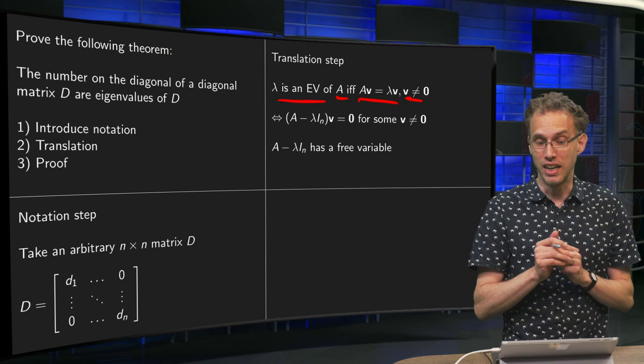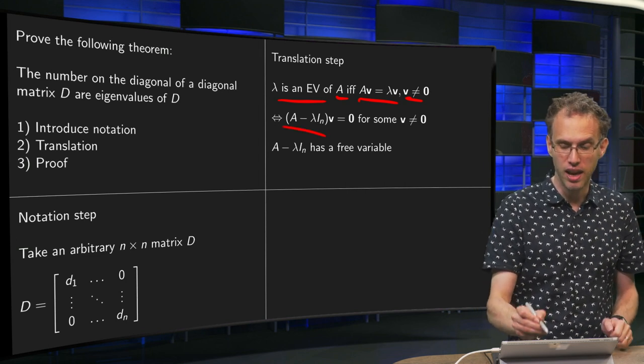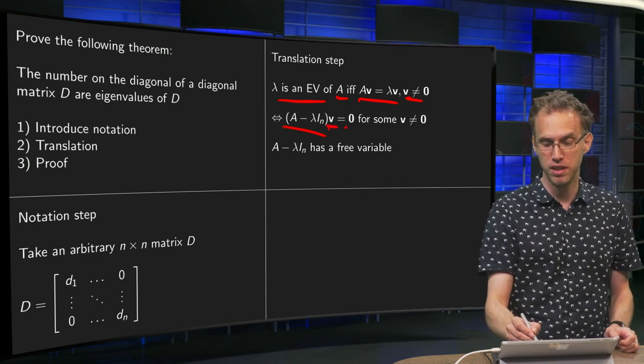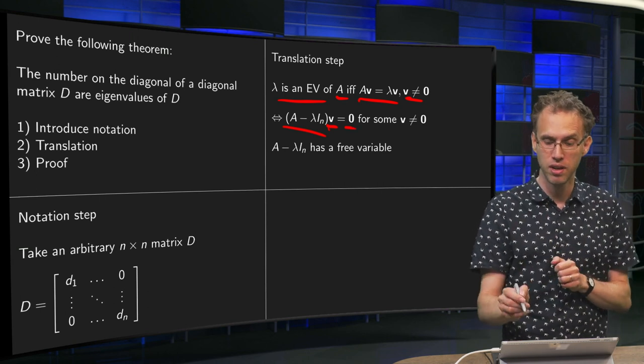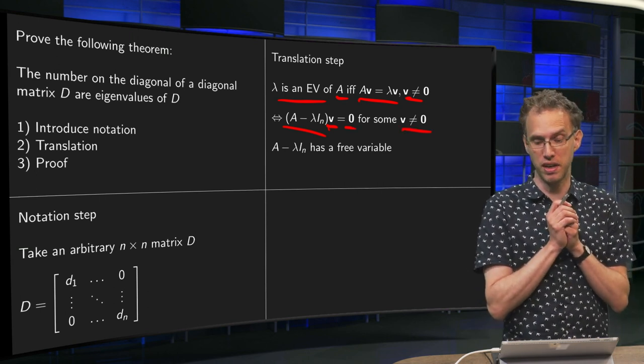Now, you can rewrite this a bit. That means that A minus λ times Iₙ times vector v equals a zero vector, for some v not equal to the zero vector.